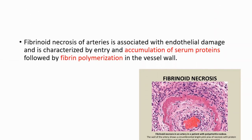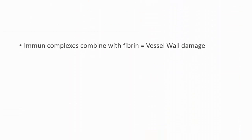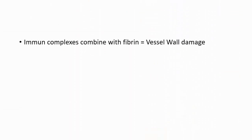Fibrinoid necrosis of arteries is associated with endothelial damage and is characterized by entry and accumulation of serum proteins and fibrin polymerization. On the image you are seeing an example of fibrinoid necrosis in a patient who has polyarteritis nodosa. Generally, immune complexes combine with fibrin and that causes vessel wall damage — this is an example of a type 3 hypersensitivity reaction.